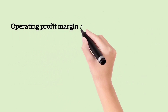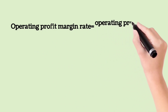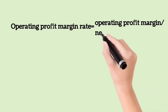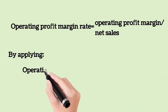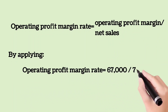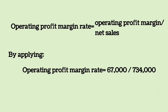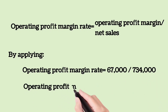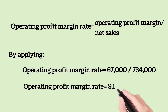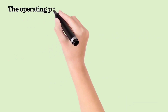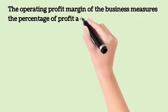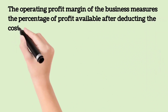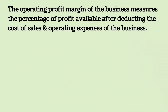Operating Profit Margin Rate is equal to Operating Profit Margin divided by Net Sales. By applying the formula, Operating Profit Margin Rate equals $67,000 divided by $734,000, which equals 9.13%. The Operating Profit Margin measures the percentage of profit available after deducting the cost of sales and operating expenses of the business.